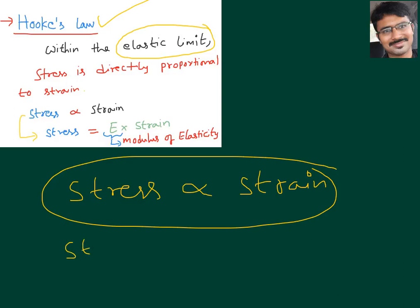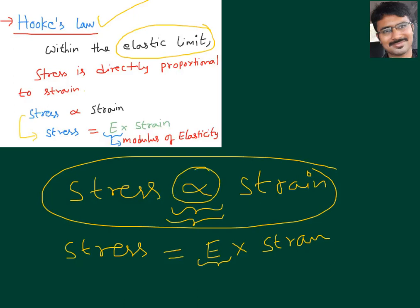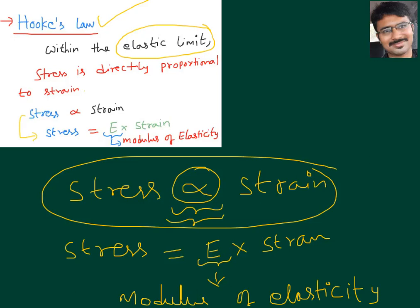To remove the proportionality symbol from stress ∝ strain, we use a proportionality constant capital E. So stress = E × strain. The question arises: what is capital E? Capital E is called the modulus of elasticity. That proportionality constant E is called modulus of elasticity.